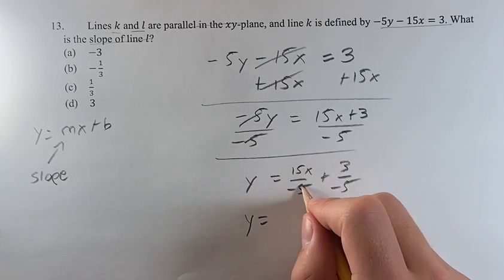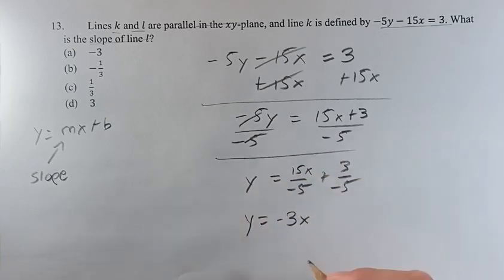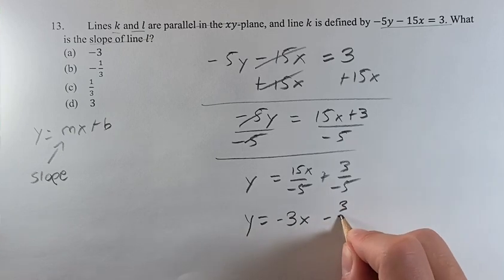In simplifying, we have 15 over negative 5 is negative 3x, moving this negative sign out to the front, minus 3 over 5.